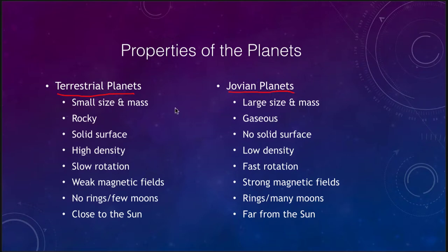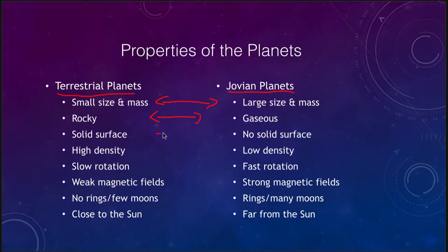The terrestrial planets are small in size and mass, whereas the Jovian planets are large. The terrestrial planets have rocky surfaces and the Jovian planets are all gaseous. Related to that, we have solid surfaces for the terrestrial planets and no solid surface for any of the Jovian planets. All of the terrestrial planets are high density, while all of the Jovian planets are lower density.